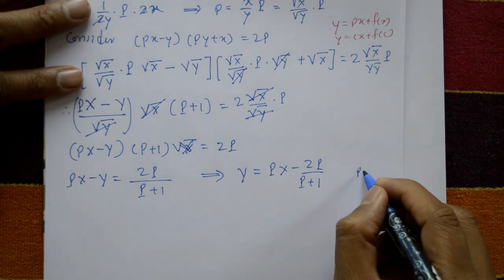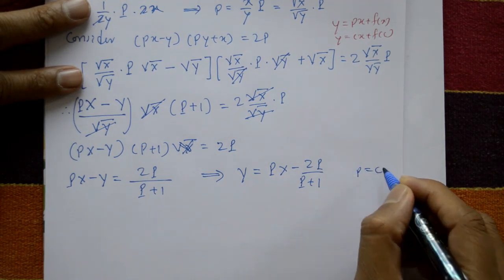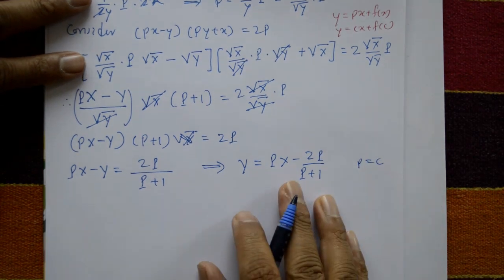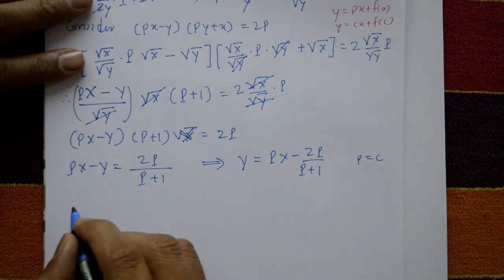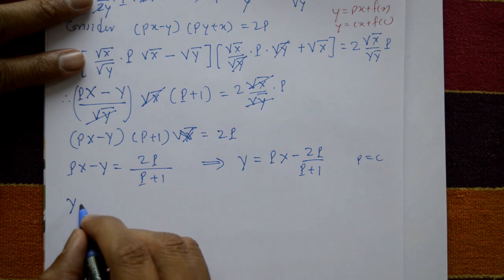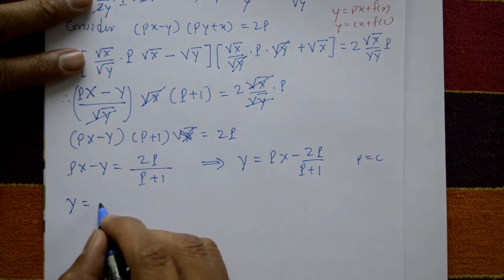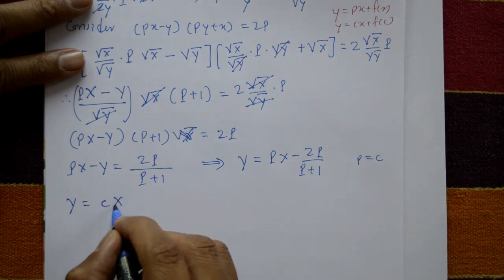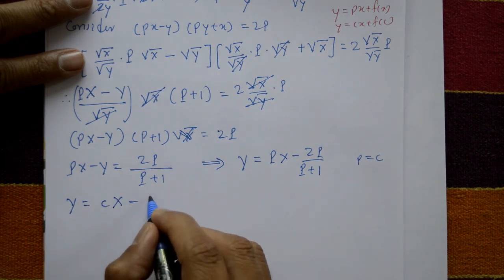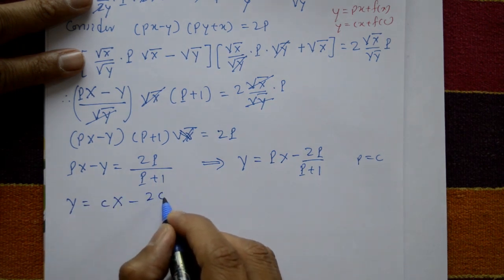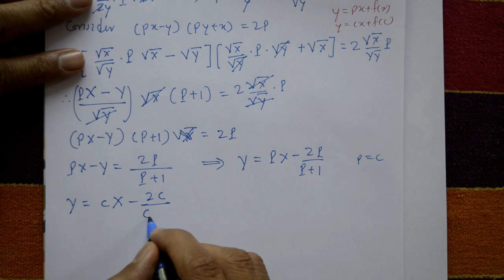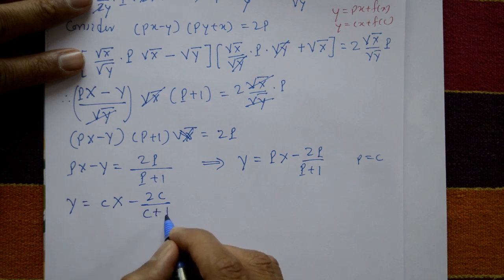Now put P = c (an arbitrary constant). The general solution becomes Y = cX - 2c/(c + 1).